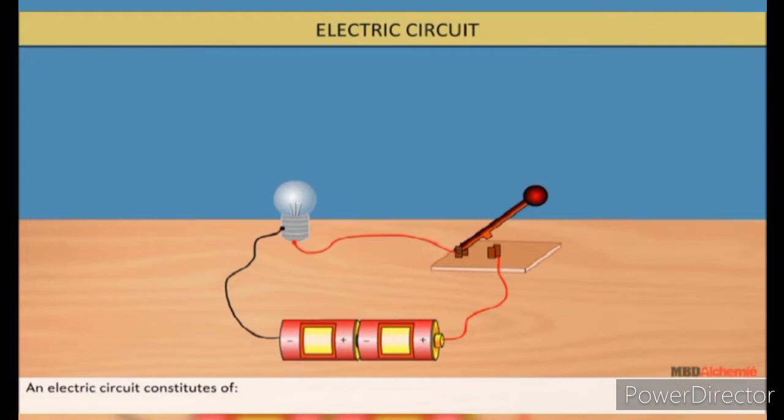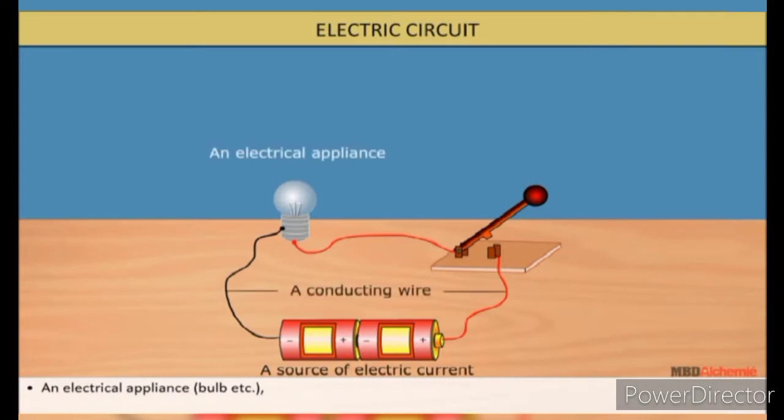An electric circuit constitutes of a source of electric current, cells, etc., a conducting wire, an electrical appliance, bulbs, etc., a switch or key.